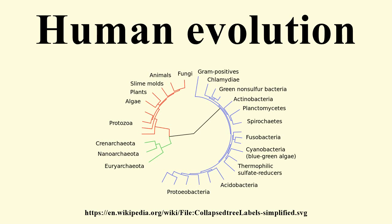Archaic Homo sapiens, the forerunner of anatomically modern humans, evolved in the Middle Paleolithic between 400,000 and 250,000 years ago. Recent DNA evidence suggests that several haplotypes of Neanderthal origin are present among all non-African populations, and Neanderthals and other hominins, such as Denisovans, may have contributed up to 6% of their genome to present day humans.